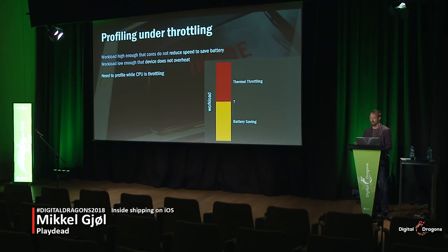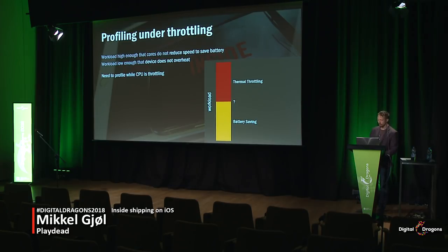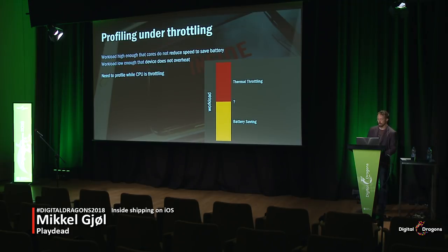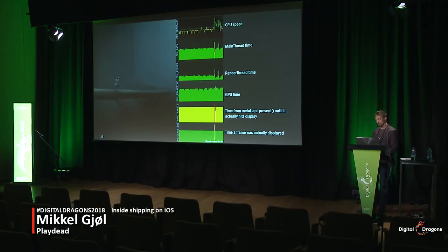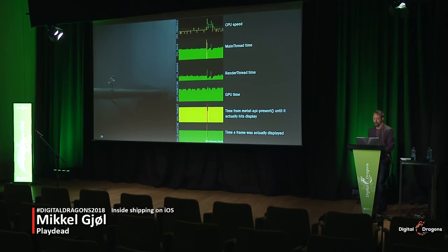An implication of this is that if you optimize something to make it twice as fast, you may not actually see that in the profile times — maybe it just reduces the CPU speed. So we kind of need to know what the CPU speed is. We built an in-game overlay where we can see the CPU speed along with all the other metrics.